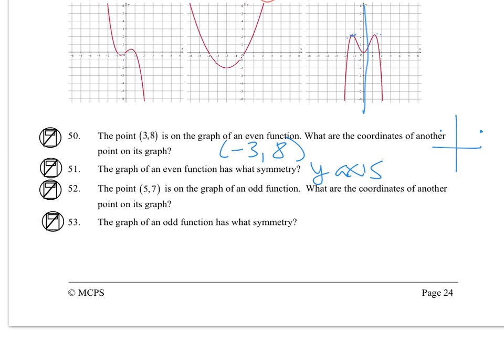We've already answered that a few times. The graph of an even function has y-axis symmetry. I'll jump to 53 first. An odd function has origin symmetry. So to answer 52, (5, 7) is here, so an odd symmetry, the other coordinates going to be (-5, -7).